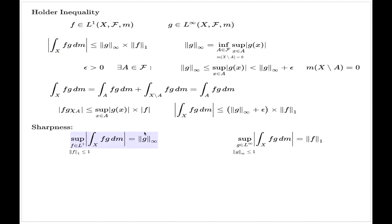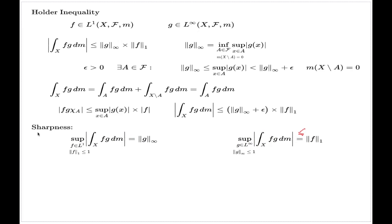The Hölder inequality itself obviously delivers the upper bound in each case. So the argument for sharpness has to show the opposite inequality — the lower bound — in both statements.